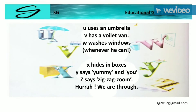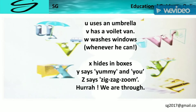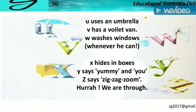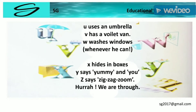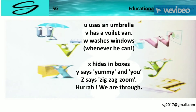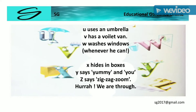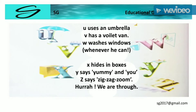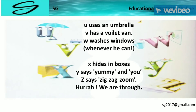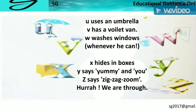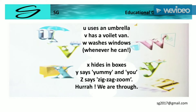U for uses an umbrella, V for has a violet van, W for watches windows wherever he can, X for hide in boxes, Y for seeds and Z for seeds zigzag zoom.